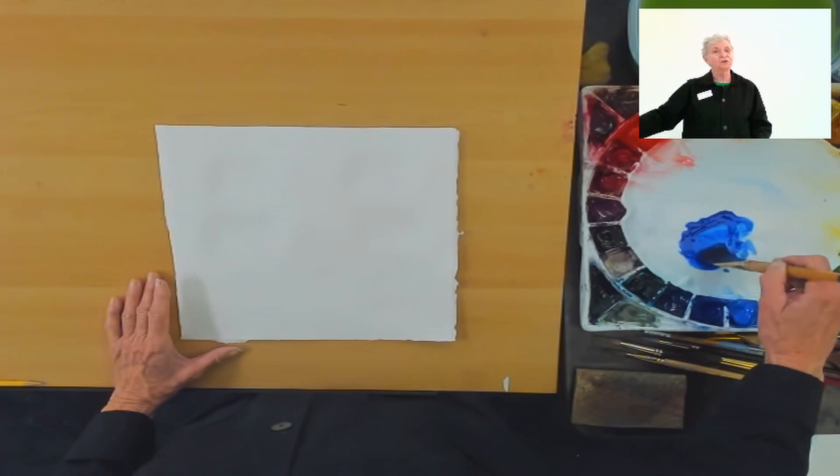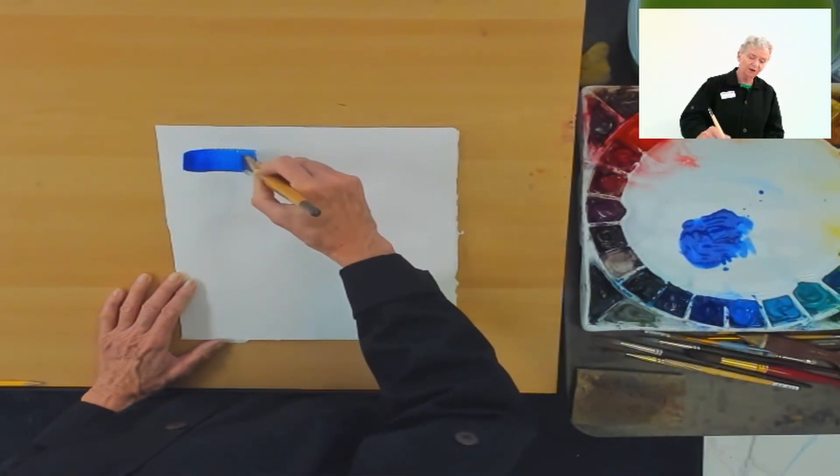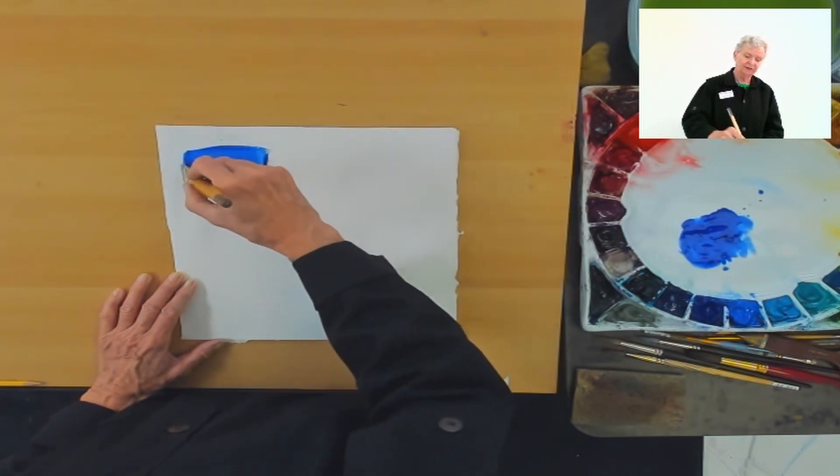I take a little bit of ultramarine blue out of the well, add some water to it, and apply it to the paper.